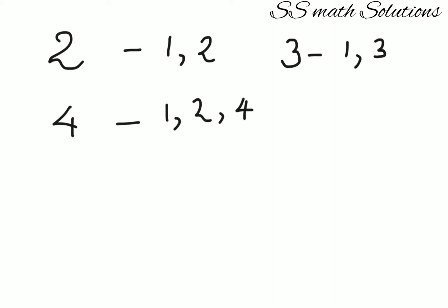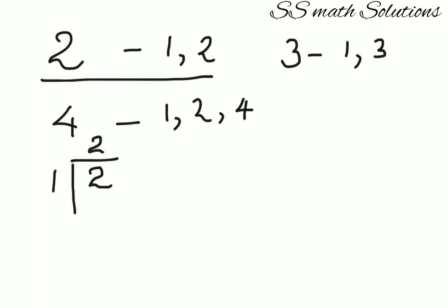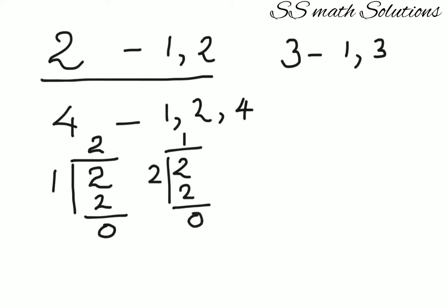Taking the number 2: I divide 2 by 1 — two into one is two, remainder zero. Then 2 divided by 2 — one into two is two, remainder zero. In both cases I got zero as the remainder, so 1 and 2 are the factors of 2. Similarly for 3: 3 divided by 1 and 3 divided by 3 both give remainder zero.